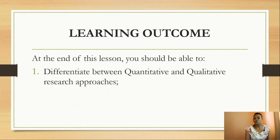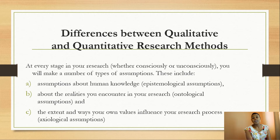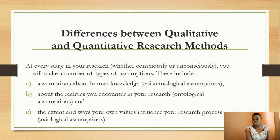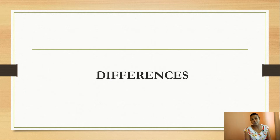At the end of this lesson, you should be able to differentiate between quantitative and qualitative research approaches. To remind ourselves of lessons 8 and 9, we said that at every stage in your research, you will make a number of assumptions and beliefs — epistemological assumptions about human knowledge, ontological assumptions about the realities you encounter, and axiological assumptions about the extent your own values influence your research.